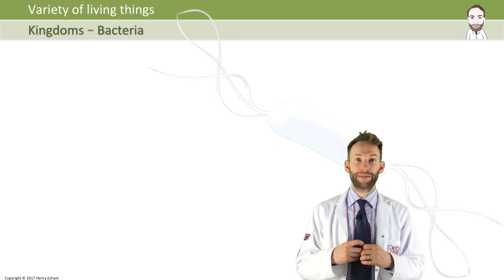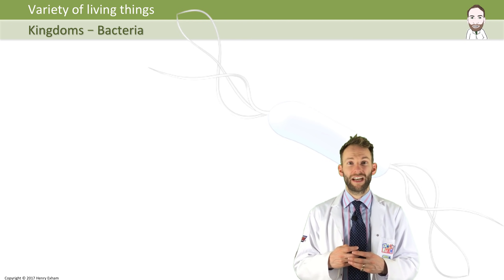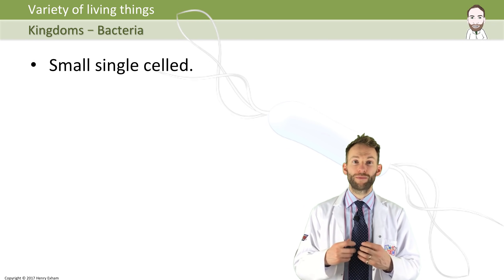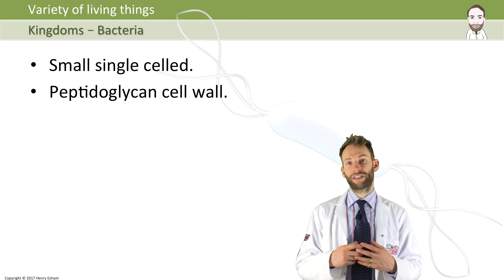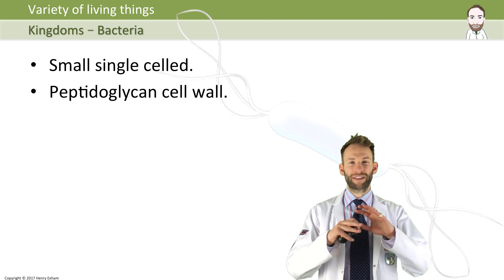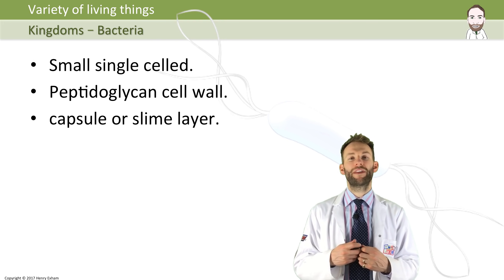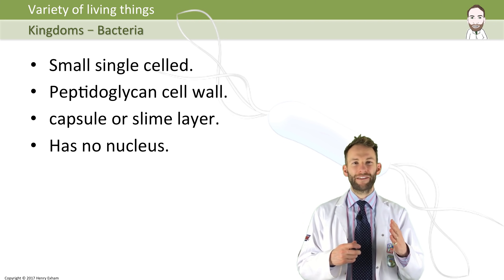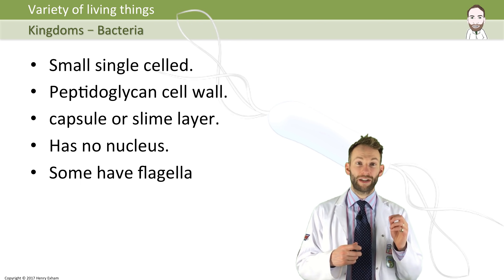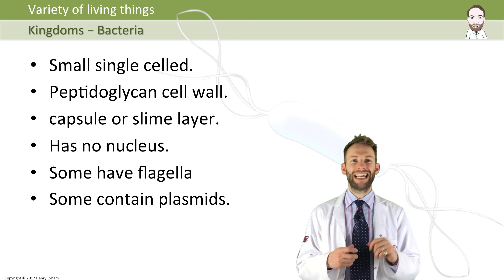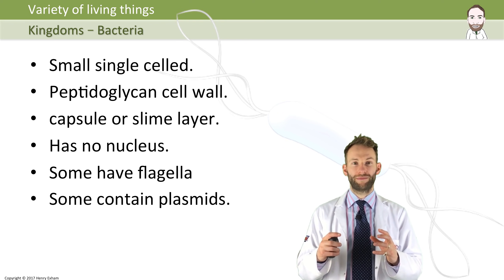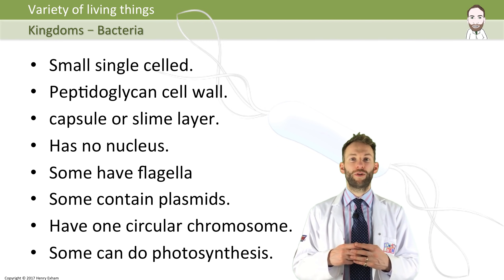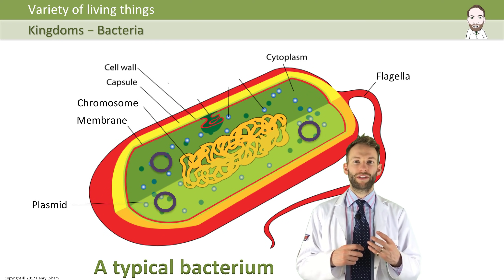The last kingdom is bacteria. Bacteria are fundamentally different from the other four kingdoms. They are all single-celled organisms, and these cells are a lot smaller than the others. They do have a cell wall, but it's made of something completely different — peptidoglycan. Some have a capsule or slime layer which can help protect them in their environment. They don't have a nucleus at all. Some have flagella — little tails that allow them to swim around. They also contain plasmids, which are little singular loops of DNA separate from their main DNA. Their main DNA is just one circular chromosome, and some bacteria can actually photosynthesize. Here's a diagram of a typical bacterial cell, showing the plasmid, flagella, chromosome, membrane, cell wall, and capsule on the outside.